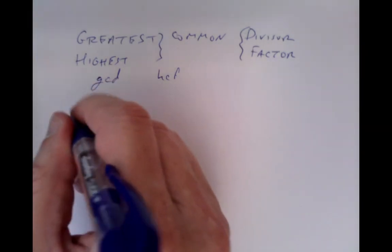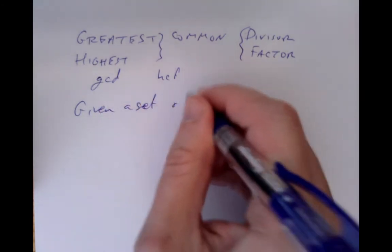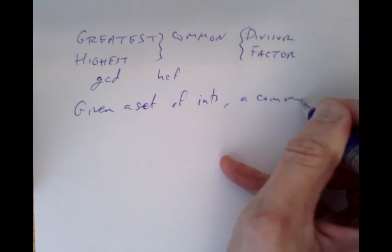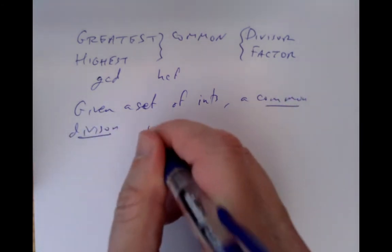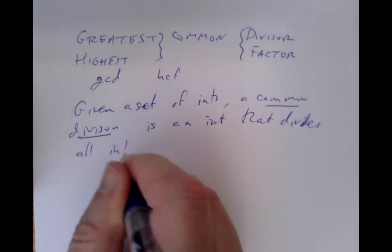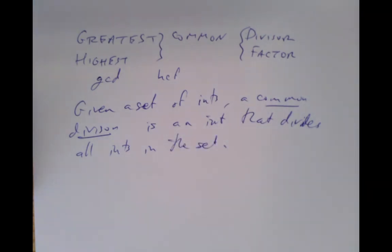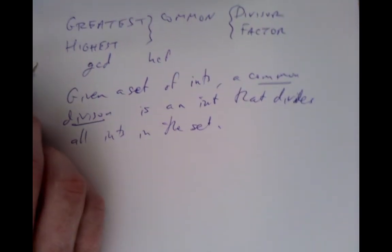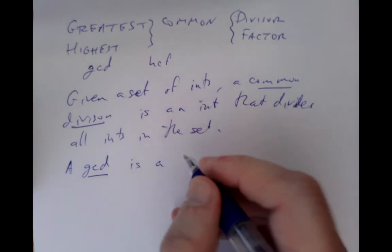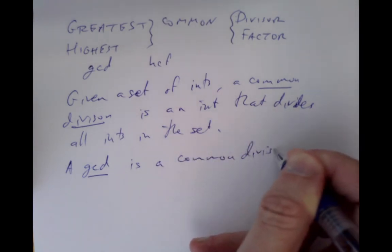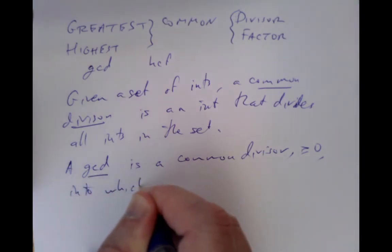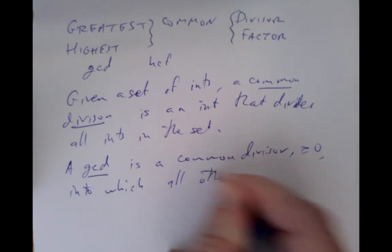You may prefer HCF, HCD, or some other combination — that's fine. Given a set of integers, a common divisor is an integer that divides all integers in the set. A greatest common divisor — unfortunately not a great name — is a common divisor that has the universal property that it's greater than or equal to zero, and all other common divisors divide into it.